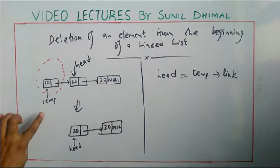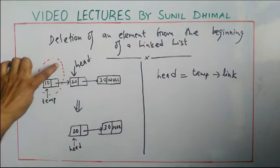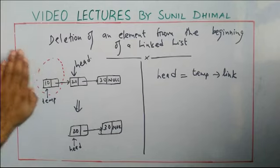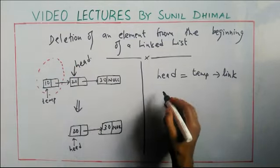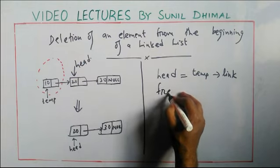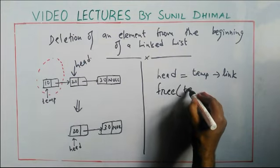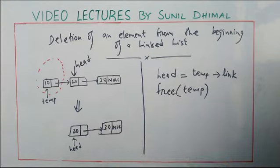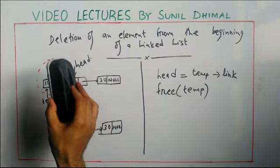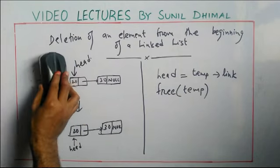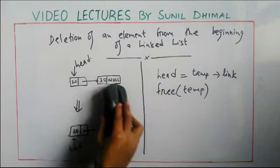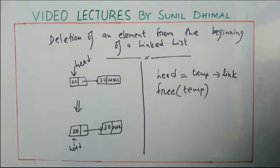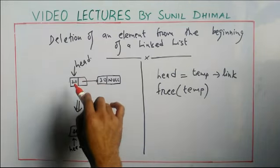Now I need to delete the temp node. I no longer need temp since that node has been removed. I delete this node by performing the free() operation — free(temp) will delete the first node. Now you are left with just two nodes in the list, 20 and 30, with head pointing to the first node.